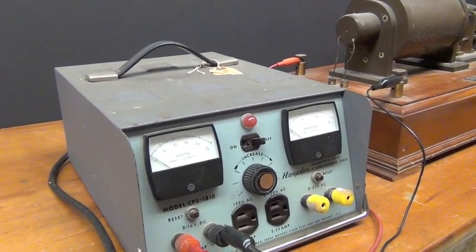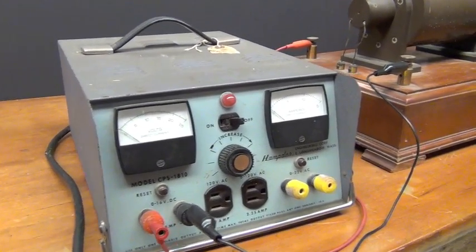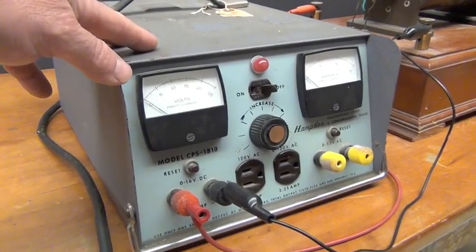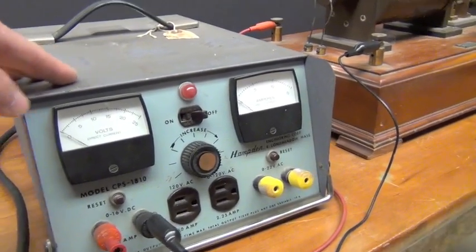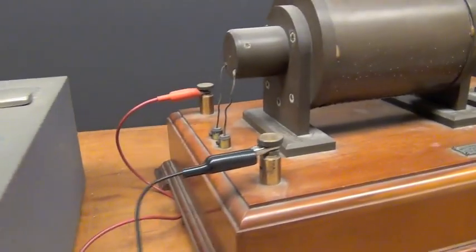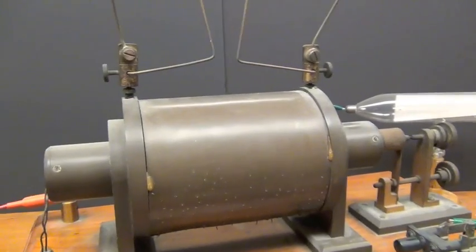I'm going to demonstrate the deflection of a beam of electrons with the following pieces of equipment. First, I'm going to use a DC power supply that's going to supply roughly 5 to 10 volts to this induction coil.